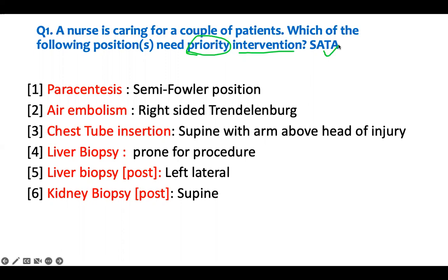You're not afraid of them anymore. There's a problem or procedure, and the patient is in a certain position. When somebody is doing paracentesis, what position should they be in? They should not be in semi-Fowler at 30 degrees - they have to sit upright at 90 degrees, so that you don't injure the bladder. So 90 degrees - this position is wrong, and this patient needs priority intervention.